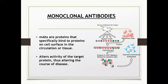Monoclonal antibodies are the main type of biologics currently used in psoriasis and other inflammatory diseases. These are proteins that specifically bind to a protein or cell surface in the circulation or in the tissue, and alter the target proteins thus altering the course of the disease. Rather than making a generalized action, these monoclonal antibodies make a targeted action on specific sites or specific cytokines.